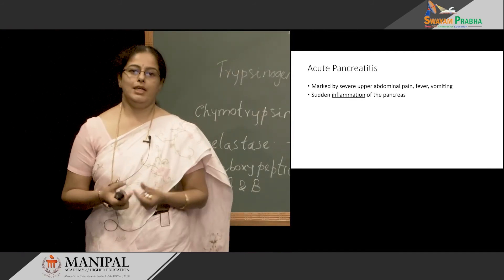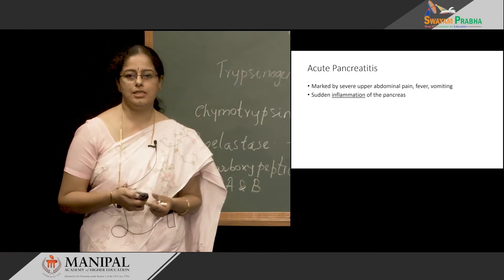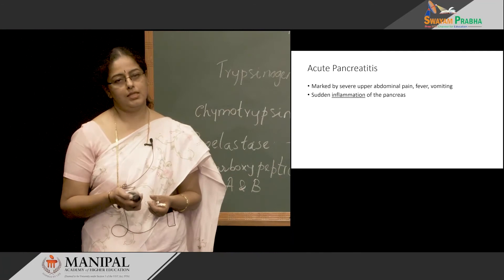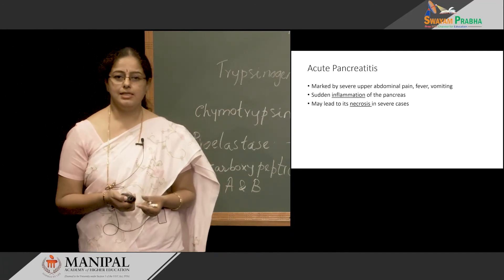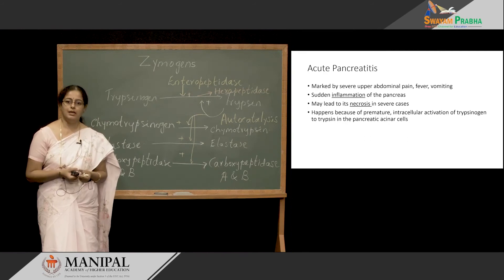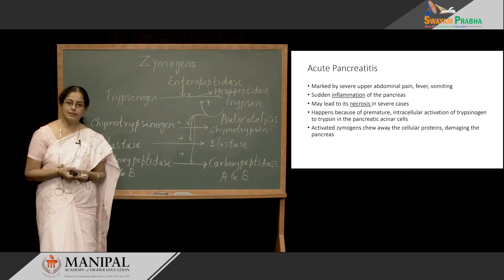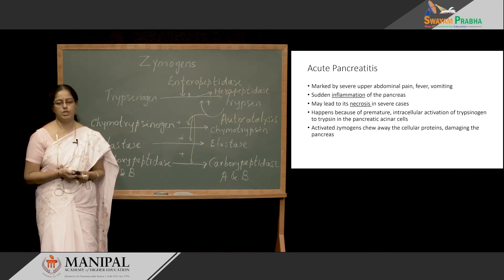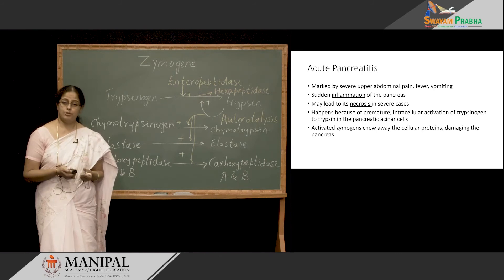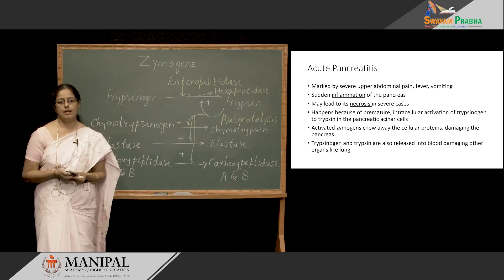In acute pancreatitis, the patient presents with severe abdominal pain, fever, and vomiting — symptoms that increase on food intake. Sudden inflammation of the pancreas is responsible, and in severe cases it can lead to necrosis of the pancreas. What happens is trypsinogen gets prematurely activated to trypsin within the acinar cells. These trypsin molecules then activate other zymogens, and all these active enzymes act on cellular proteins, damaging the pancreas. These zymogens and active enzymes are also released into the blood, circulate, and can reach different organs like the lungs, causing further damage.